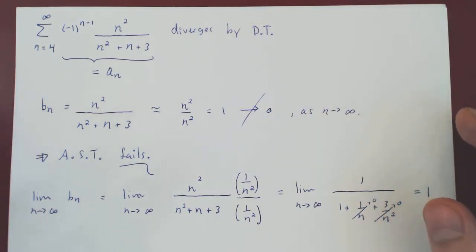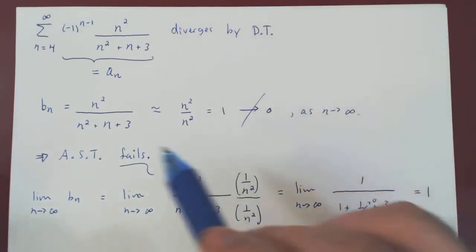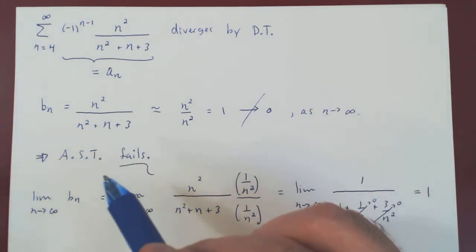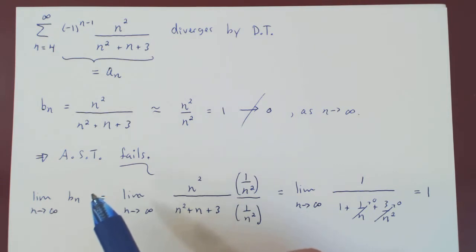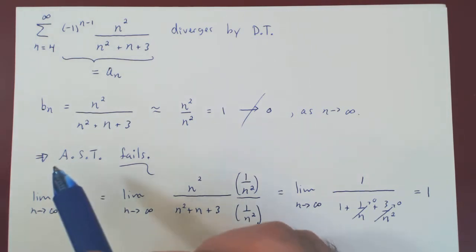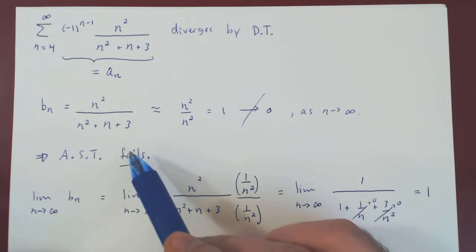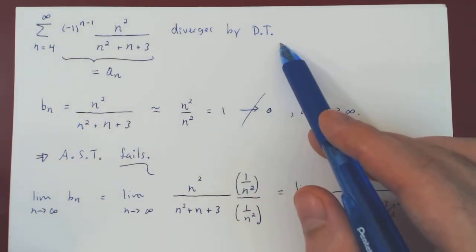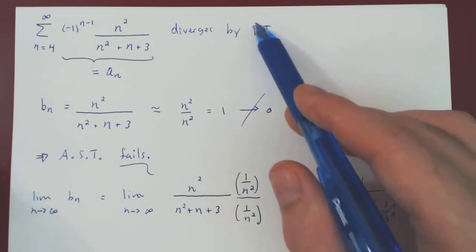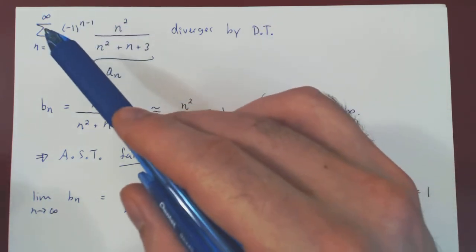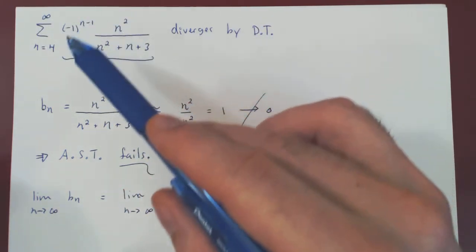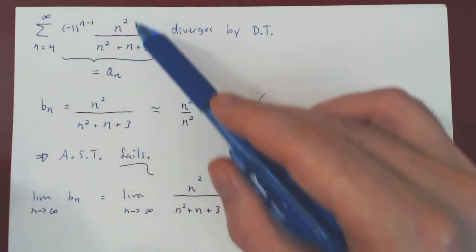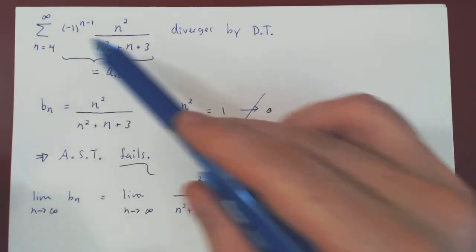So, always be careful not to conclude divergence by the alternating series test because the test either applies and yields convergence. If the test does not apply, it fails. Then you have to figure out what happens to the series using a different test. In this case, it was the simple divergence test. As the terms we are summing are not shrinking to 0, they are not getting small enough, and so the series diverges.